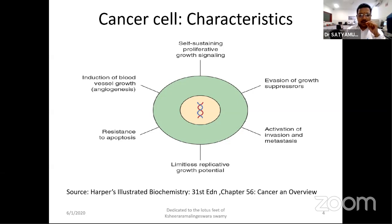These cancer cells creep from the tissue of their origin into the circulation, and from there they spread into different tissues. They have limitless replicative growth potential. They are resistant to apoptosis, which is programmed cell death — any old cell in the body is subjected to apoptosis, but this is overcome by the cancer cell. And finally, any tissue wanting to survive needs a blood supply, called angiogenesis. These tumor cells have the potential to build up their own vascular supply — that is called angiogenesis. These are the characteristic features of a cancer cell.